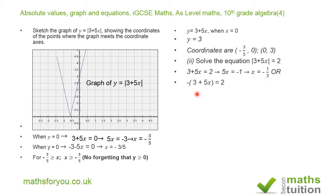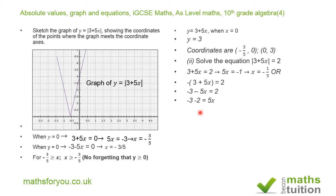For the second equation, we solve minus of (3 plus 5x) equal to 2. Removing the brackets gives minus 3 minus 5x equal to 2. Adding 5x to both sides and subtracting 2 from both sides gives minus 3 minus 2 equal to 5x, so minus 5 equals 5x. Dividing both sides by 5 gives x equal to minus 1. So we have two values: minus 0.2 and minus 1 — for each y value, we have two x values.